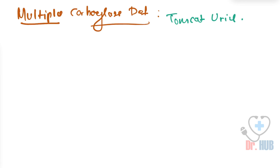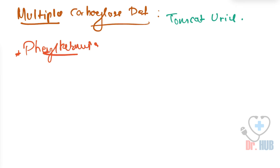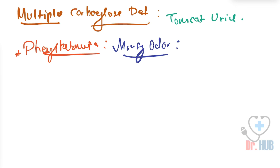Next is phenylketonuria. In phenylketonuria, the urine produced has a mousey odor.